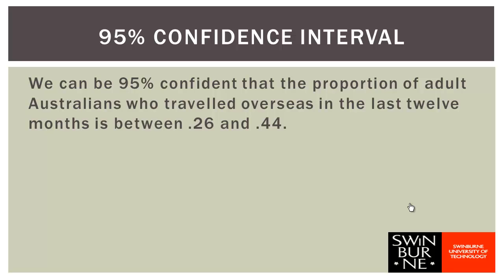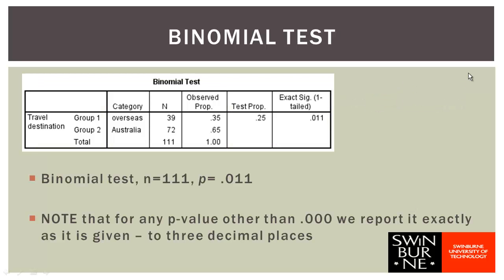We could also approach our hypothesis more directly by doing a significance test. As we're dealing with categorical data and comparing a sample proportion to a known reference proportion, a one-sample t-test is not appropriate. The test we use here is called a binomial test. The sample proportion — the observed proportion — is 0.35, the same as in our frequency table. We're comparing this to the proportion of Australians who travelled overseas in 2010, 0.25, our test proportion. The statistics we present are the sample size, n = 111, and the p-value, 0.011.